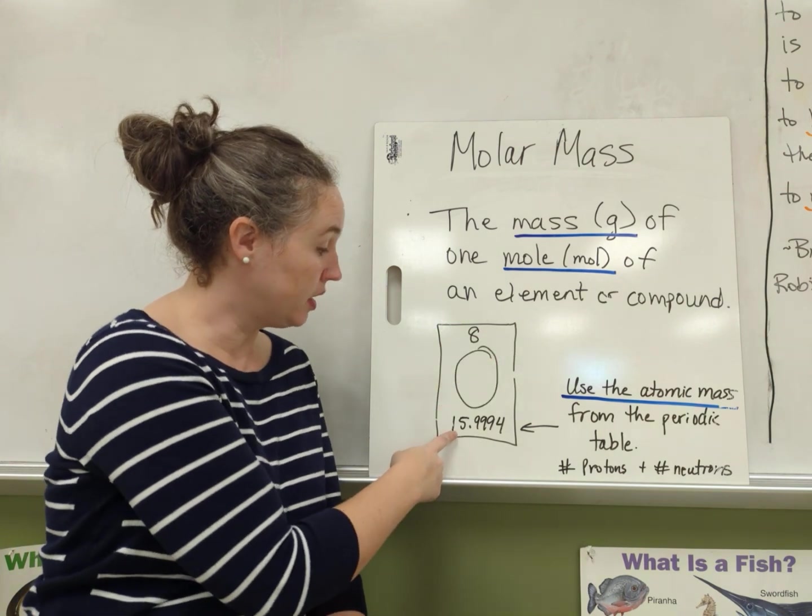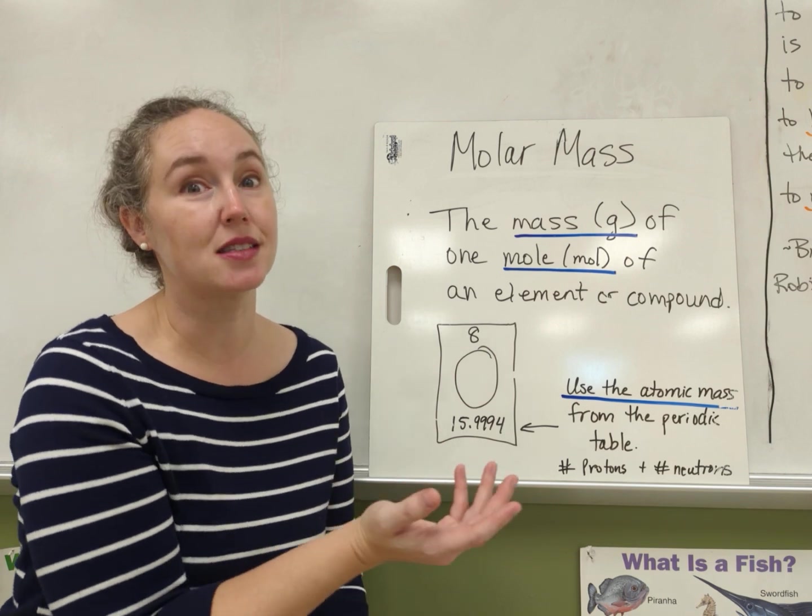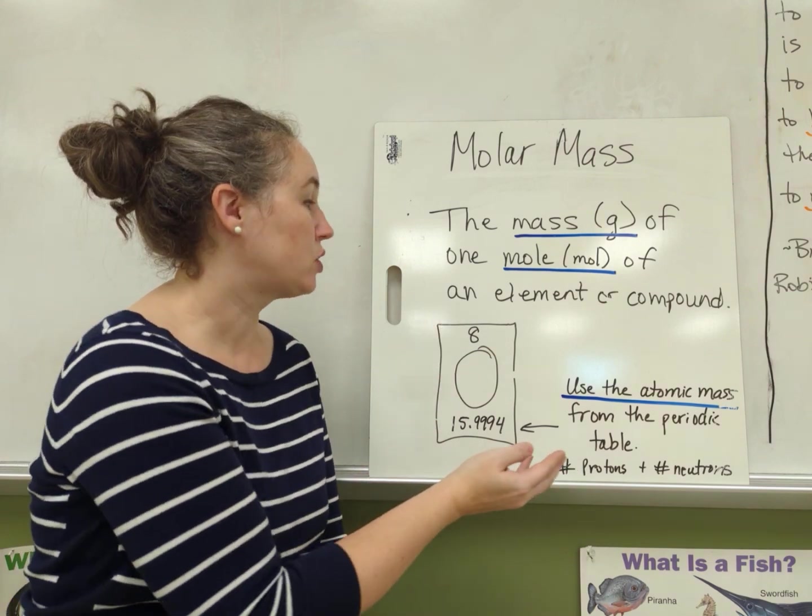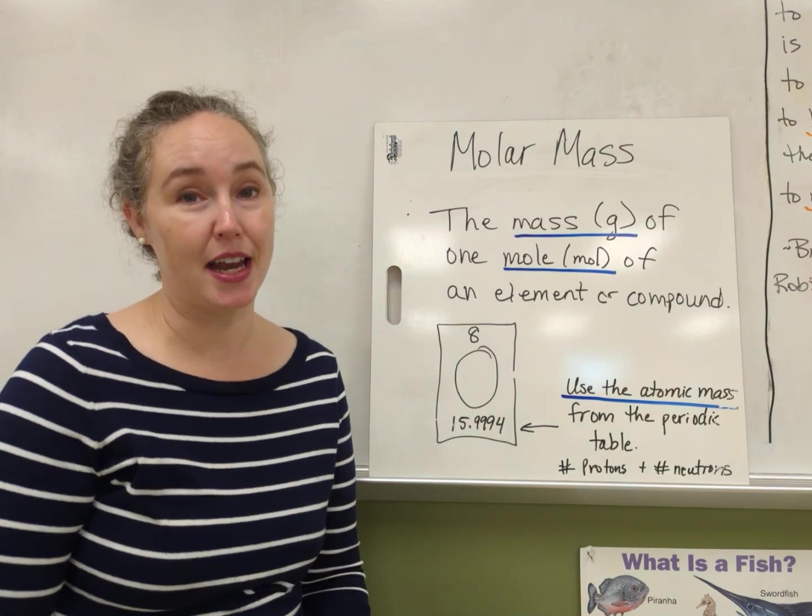So at the bottom of the periodic table box, you will find the mass of that element, because this represents the number of protons and neutrons.